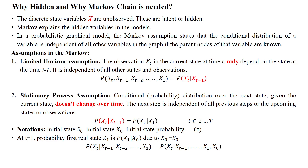Why do we need the hidden Markov model? The hidden Markov model is the combination of Markov chains and a combination of states and observed values. Here, x is called a discrete state variable, which is a hidden state that is unable to be observed by the user. This can be explained by Markov chains, which have hidden variables of the given model. In a probabilistic graphical model, the Markov assumption states that the conditional distribution of a variable is independent of all other variables in the graph when the parent nodes of that variable are known. That means the probability of the next state depends only upon the current state.